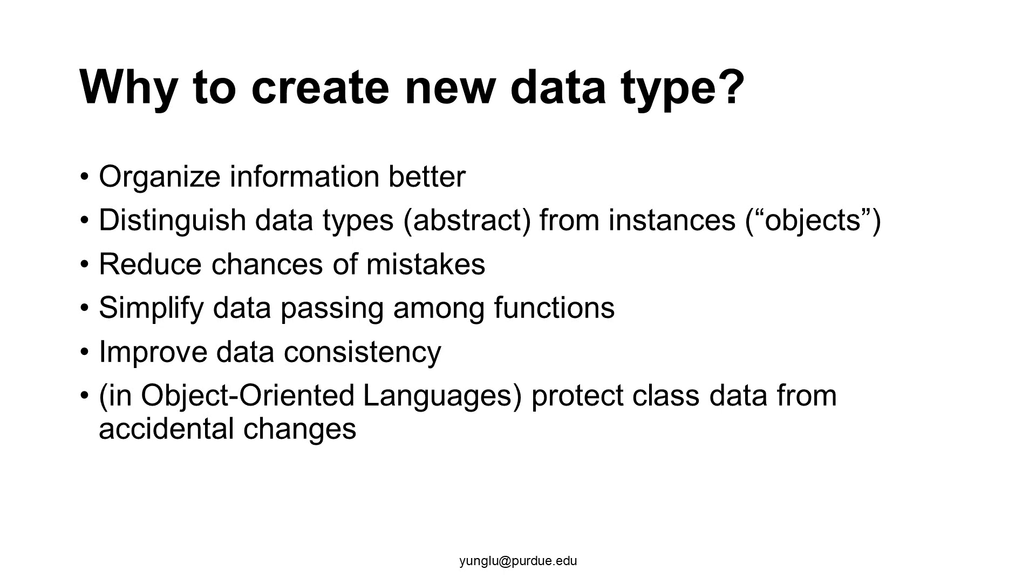Similarly, an integer is a data type. We cannot say integer is 5. Instead, we can create an instance of integer and assign 5 to this particular integer. C is not an object-oriented programming language. In an object-oriented language, a class is a data type, similar to the concept of a structure. An instance of a class is called an object. In other words, an object is an instantiation of a class. In this class, I'll borrow the terminology from object-oriented languages. We will use the word object to refer to an instance of a data type.